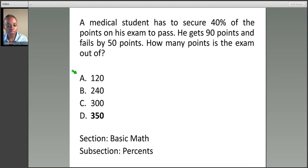Let X be the maximum number of points. We're really looking for X. What do we know about X? We know that 90 points, don't subtract here, plus 50 points, not subtract, is equivalent to 0.4 times X.